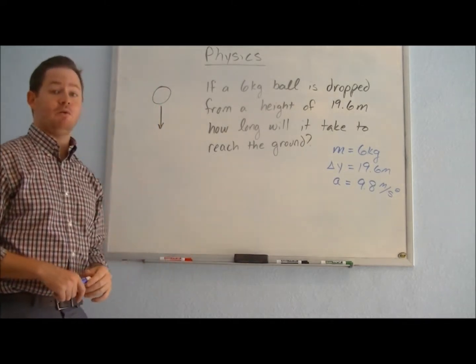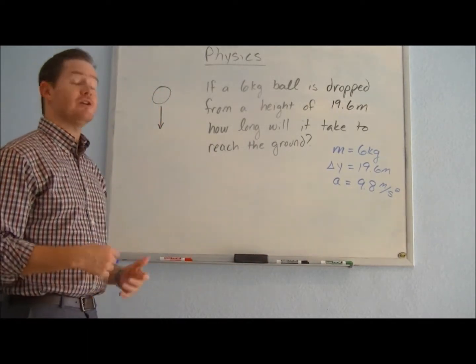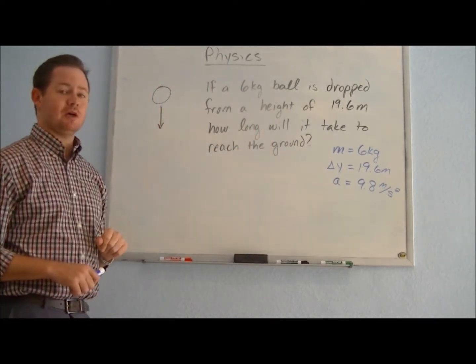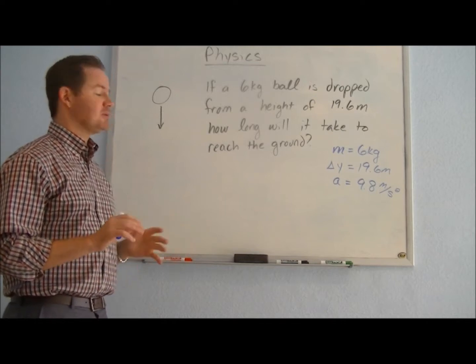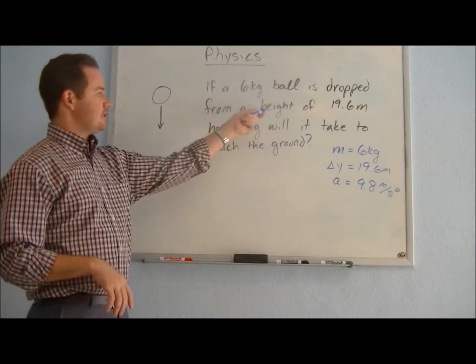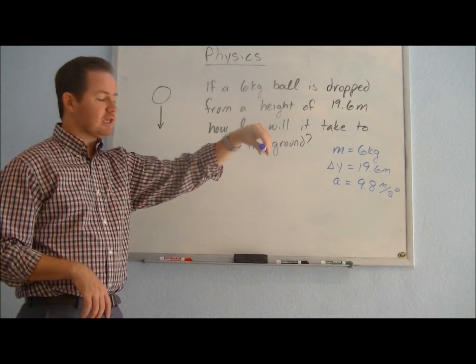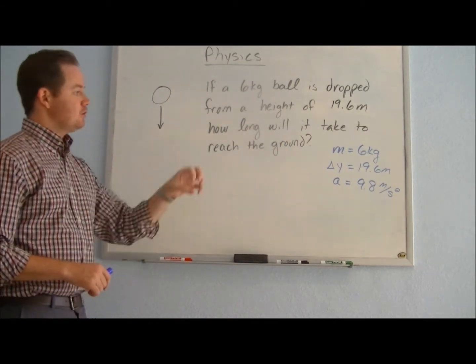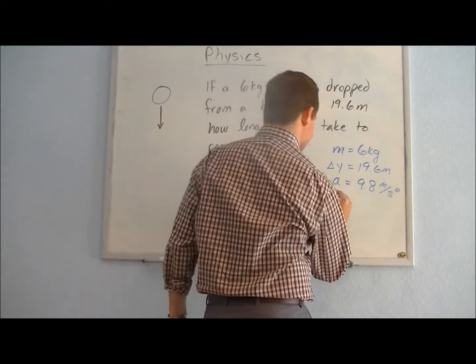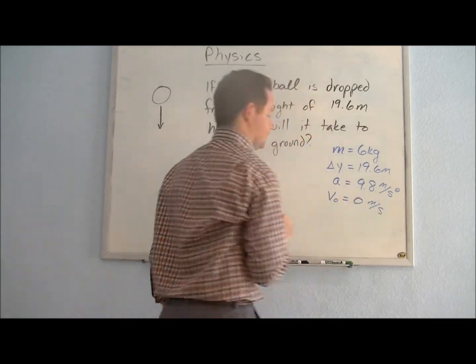The acceleration due to gravity, whenever you have a vertical component of acceleration, it's always 9.8 meters per second squared, as long as you're here on Earth. And then there's one other value that we know from this problem that isn't explained explicitly in the problem, but it is something that we can pull from the information given. It says that it's dropped from a height of 19.6, so we're holding the ball, and then we're letting go of it, and it begins to fall, which means right when we let go of it, we do know the initial velocity of that ball. Just before the ball begins to fall, it starts out with an initial velocity of 0 meters per second.